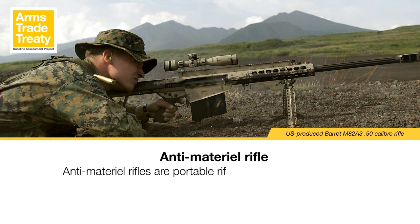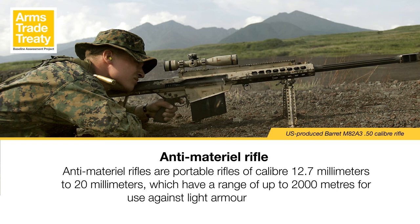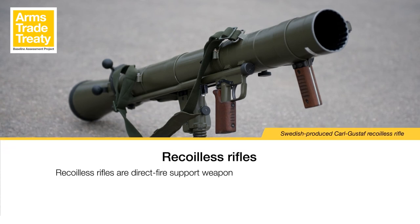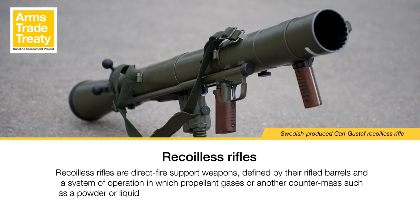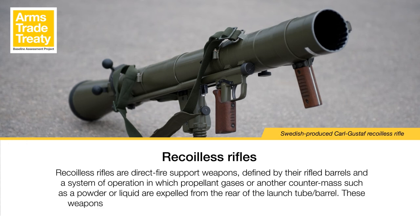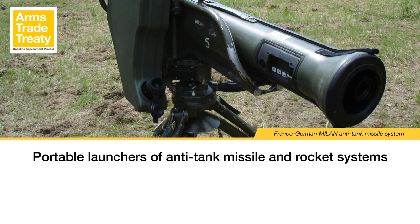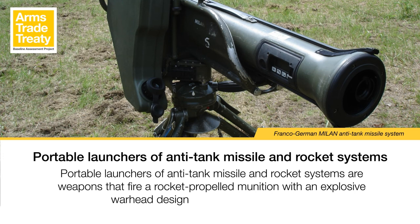Anti-materiel rifles are portable rifles of calibre 12.7mm to 20mm, with a range of up to 2,000 metres, for use against light-armoured vehicles. Recoilless rifles are direct fire support weapons defined by their rifled barrels and a system in which propellant gases, or another counter-mass such as a powder or liquid, are expelled from the rear of the launch tube or barrel. These weapons typically range between 57mm to 90mm in calibre. Portable launchers of anti-tank missile and rocket systems fire a rocket-propelled munition with an explosive warhead designed to defeat tank armour. These have also been referred to as man-portable anti-tank systems (MANPATs or MPATs).